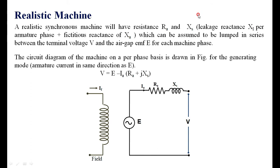Start with the realistic machine model of a synchronous machine. In the realistic machine, we will have a resistance — that is the armature resistance — and there is a synchronous reactance Xs, which is a combination of the leakage reactance and the fictitious reactance of armature reaction. These can be lumped in series between the terminal voltage V and the air gap EMF or generated EMF E.